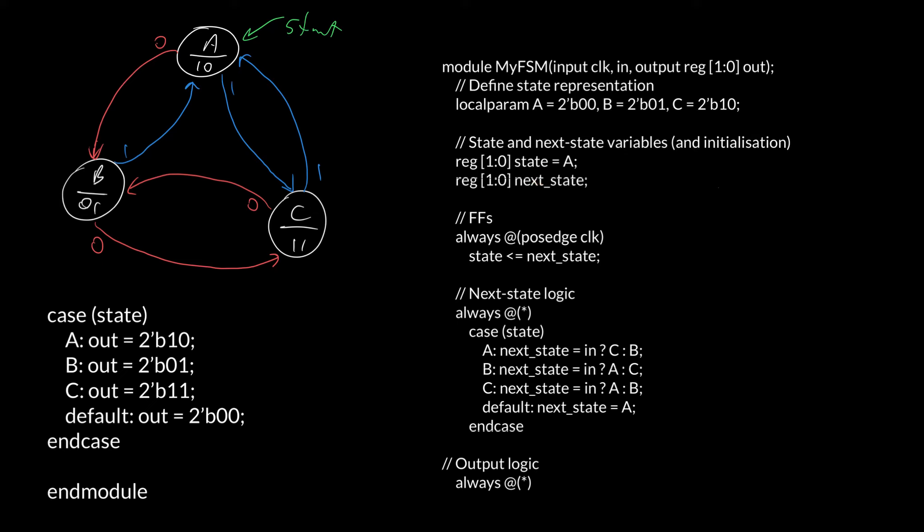Next, we define our variables for holding the state and the next state. The state's always going to be a register. The next state will be a register if you use a case statement. It will be a wire if you use an assign statement. Make sure to initialize your state to the starting state when you declare your state variable. Next, we define our flip-flops. At the rising edge of the clock, the next state becomes the current state. And finally, we just have to define two combinational logic circuits. The first one tells us what our next state is, given our current state and the current input. And the output logic tells us what our output is, given the current state, because it's a Moore finite state machine.